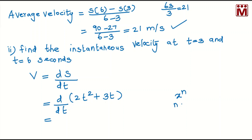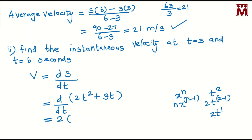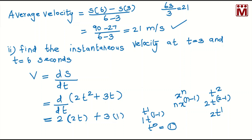Using the formula: x to the power n differentiates to n times x to the power n minus 1. For 2t squared, differentiating gives 2 into 2t to the power 2 minus 1, which is 4t. For 3t, differentiating t gives t to the power 1 minus 1, which is t to the power 0 equal to 1. So this becomes 3 into 1. Therefore v equals 4t plus 3.